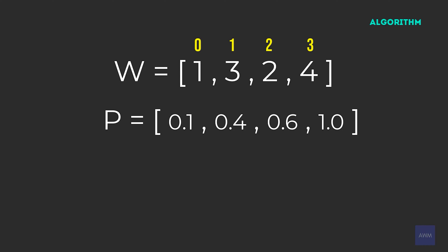Now we have all of our ranges. If we randomly choose 0.5, index two should be chosen. If 0.4 is generated, index one would be chosen. If 0.05 is generated, index zero would be chosen. To find the index associated with a randomly generated decimal, we can use binary search since our probabilities array is sorted — it's much faster than a linear search.